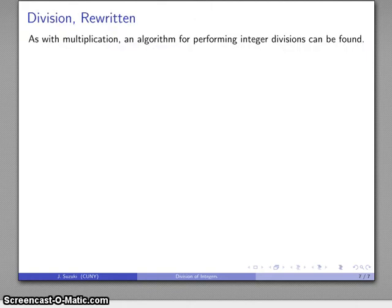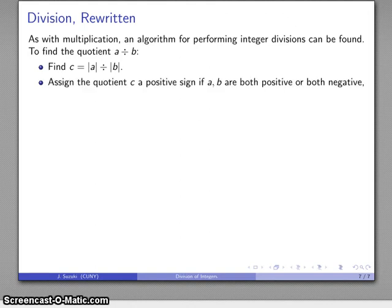Now remember, as with multiplication, we can find an algorithm for performing integer divisions. To find the quotient a divided by b, essentially what we did is used the definition of multiplication as the inverse operation to addition. We found the quotient by ignoring the signs entirely, and then we assign the quotient a sign depending on whether a and b are both positive or both negative.